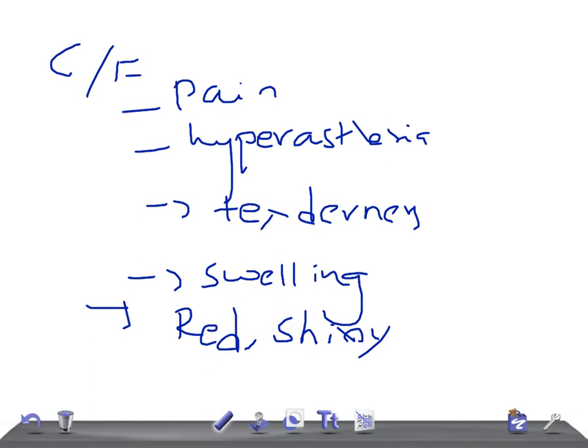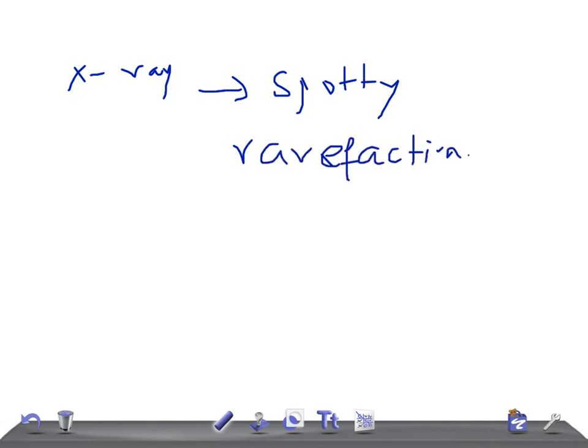The x-ray finding is really very important. The x-ray shows spotty rarefaction - this is the characteristic. That results in osteoporosis, and general deformities and stiffness can be there.